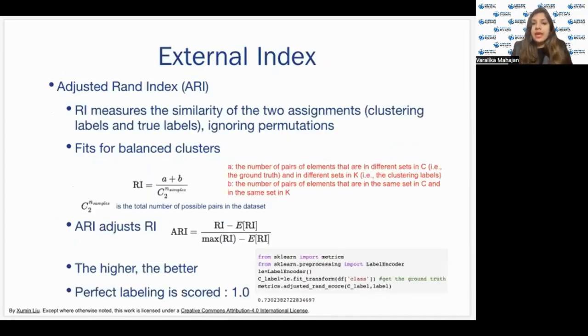Now, how do you calculate the two? External index, which is calculated at the adjusted RAND index, ARI. What is this? RI is basically the measure, it measures the similarity of two assignments, clustering labels and true labels and it ignores the permutation. So, over here, you can see the formula for RI, which is further, we do adjusting in it to get the ARI formula over here and now how do you evaluate this? The higher this value, the better it is. A perfect labeling score is one, which means that our clustering labels were same as the target labels. That's why we received the accuracy as one.